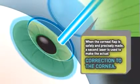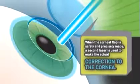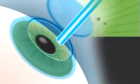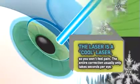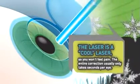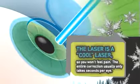When the corneal flap is safely and precisely made, a second laser is used to make the actual correction to the cornea. The laser is a cool laser so you won't feel pain. The entire correction usually only takes seconds per eye.